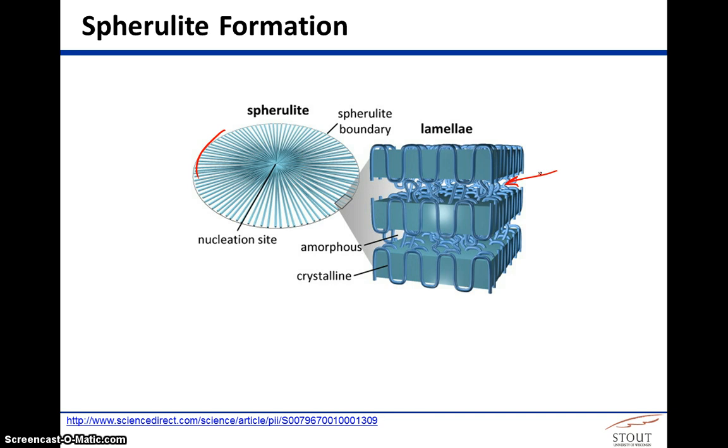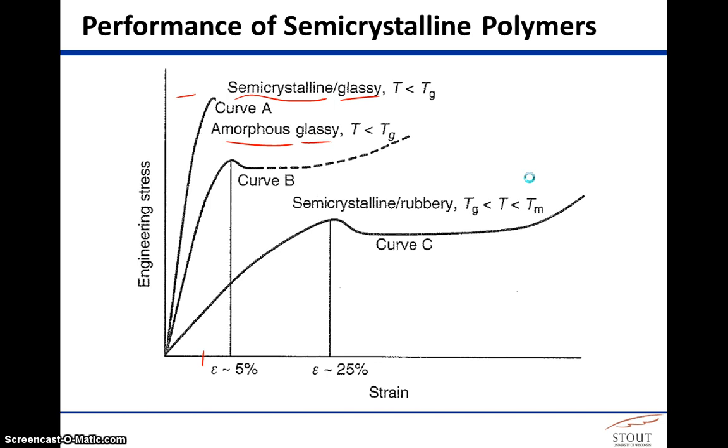You would have crystalline, physically cross-linked spherulites, and then you have rubbery amorphous regions in between. And this is kind of the secret to the great properties of HDPE.